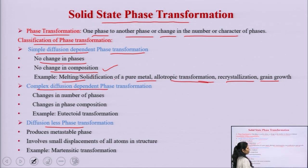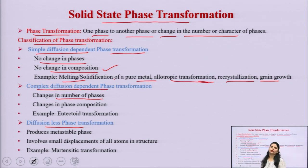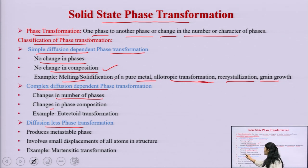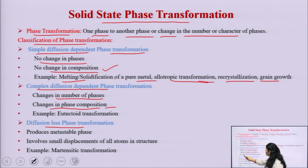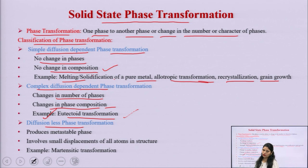Next, we come to the complex diffusion dependent phase transformation. In this case, there will be a change in the number of phases — the phase will change from one form to another — and there will also be a change in the phase composition. An example is the eutectoid transformation, where both phases and composition change.